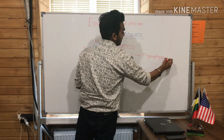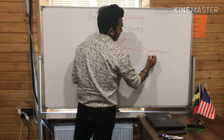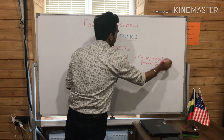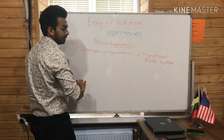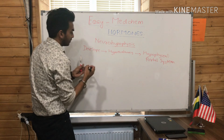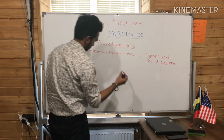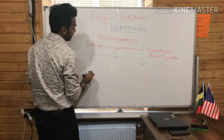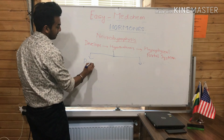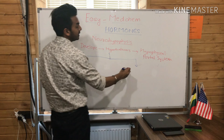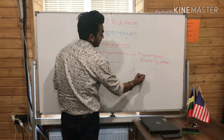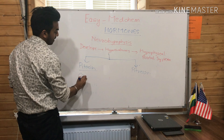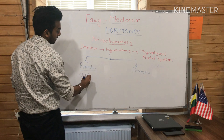The hormones of the neurohypophysis develop at the level of the hypothalamus and are stored there. When there is an urge for that hormone, these stored hormones travel from the hypothalamus towards the neurohypophysis through the hypophysial portal system.